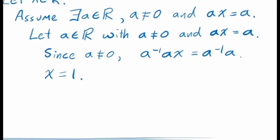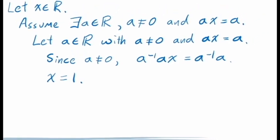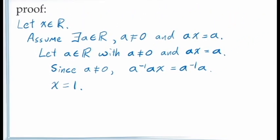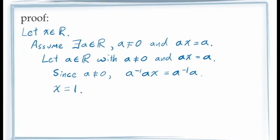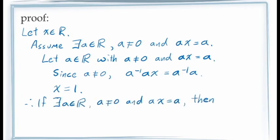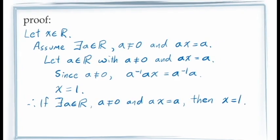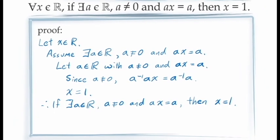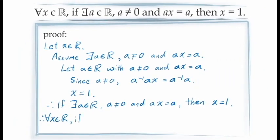Of course, we're now able to make our conclusions by the principle of conditional proof. We can say that if our antecedent is true, then our consequent is true. And since x was an arbitrary real number, we can conclude that this is true for all values of x.